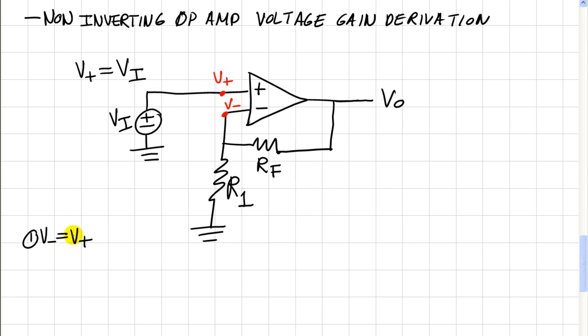And so using this rule, we can say that V inverting is equal to V i.